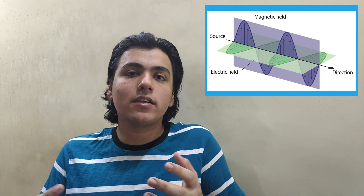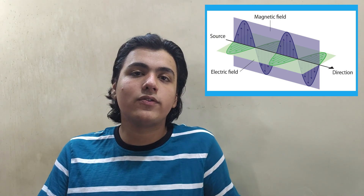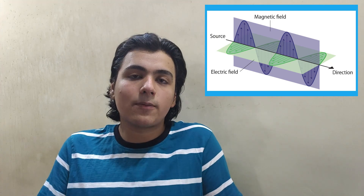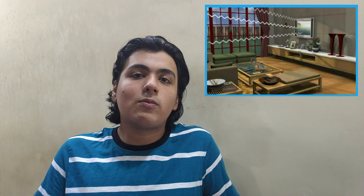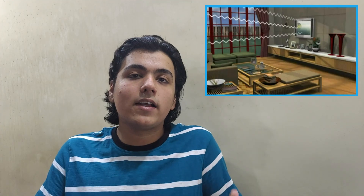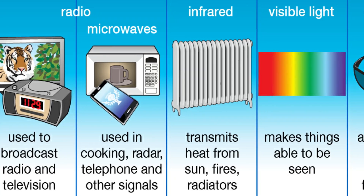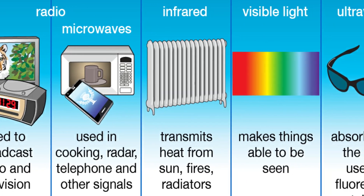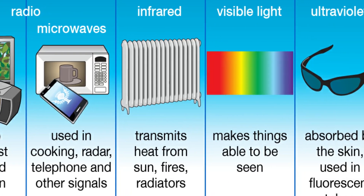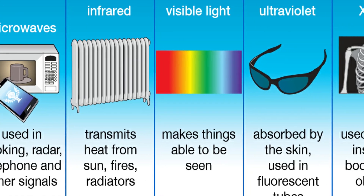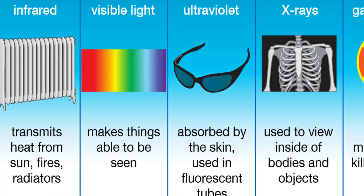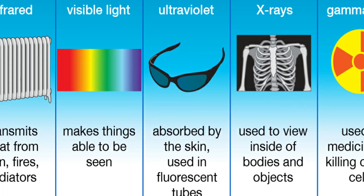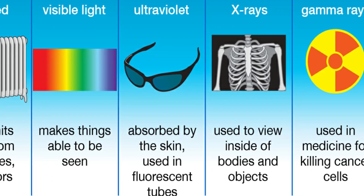Electromagnetic radiation is basically waves of electromagnetic field that are propagating through space. It is a form of energy that is all around us and it takes many forms — for example, radio waves, microwaves, X-rays, gamma rays, infrared rays, and even visible light. Yes, the visible light around us is a kind of electromagnetic radiation.